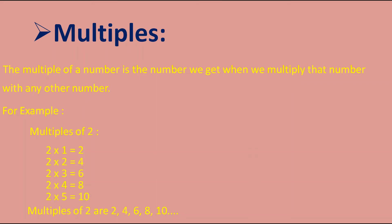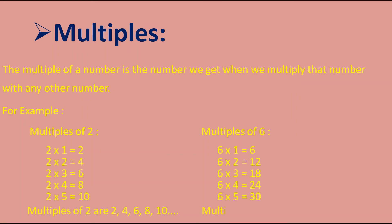Let's take one more example — multiples of six. Six ones are six, six twos are twelve, six threes are eighteen, six fours are twenty-four, six fives are thirty, and so on. There are an infinite number of multiples. So multiples of six are 6, 12, 18, 24, 30, and so on.